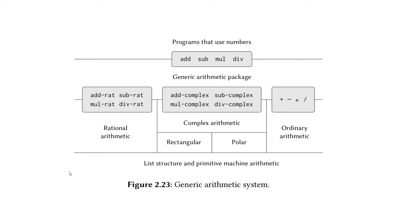In chapter 2.5, we are now combining the complex number we designed with the rational number designed back in chapter 1, and also ordinary numbers — which in the code they call scheme numbers, though I updated the code to call the package ordinary with the tag 'number'. We have three different types of numbers bundled together, with generic procedures add, sub, mul, and div dispatching via data-directed programming to the corresponding procedures for each number type.